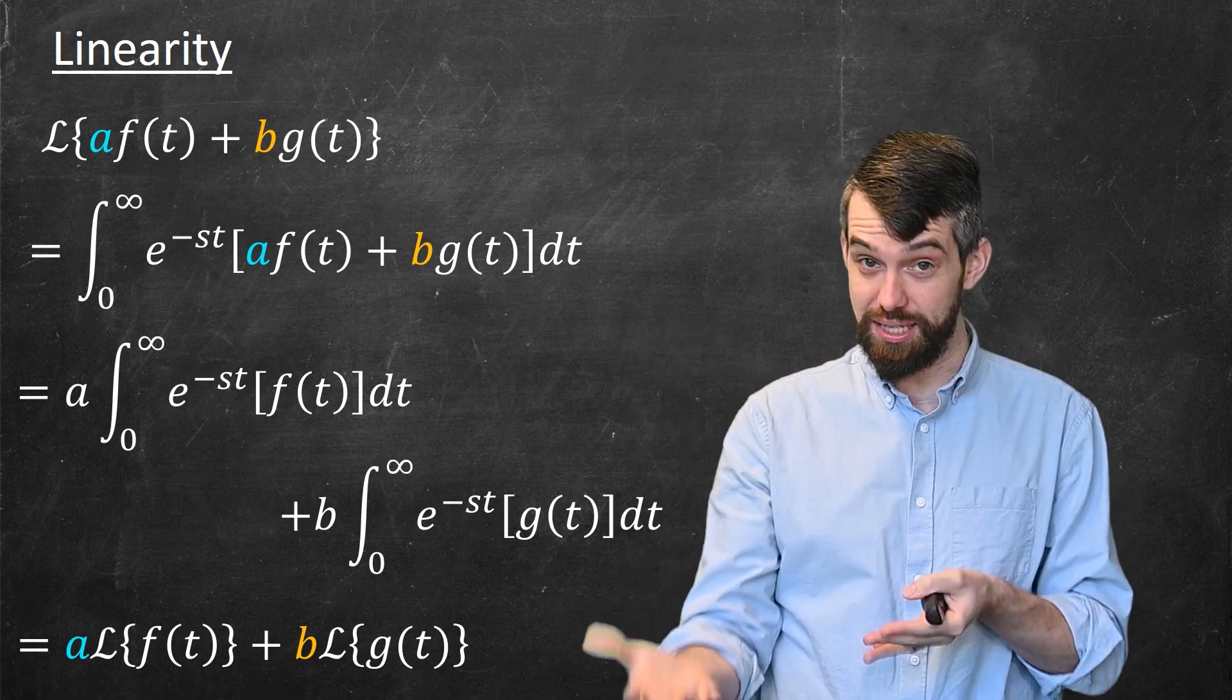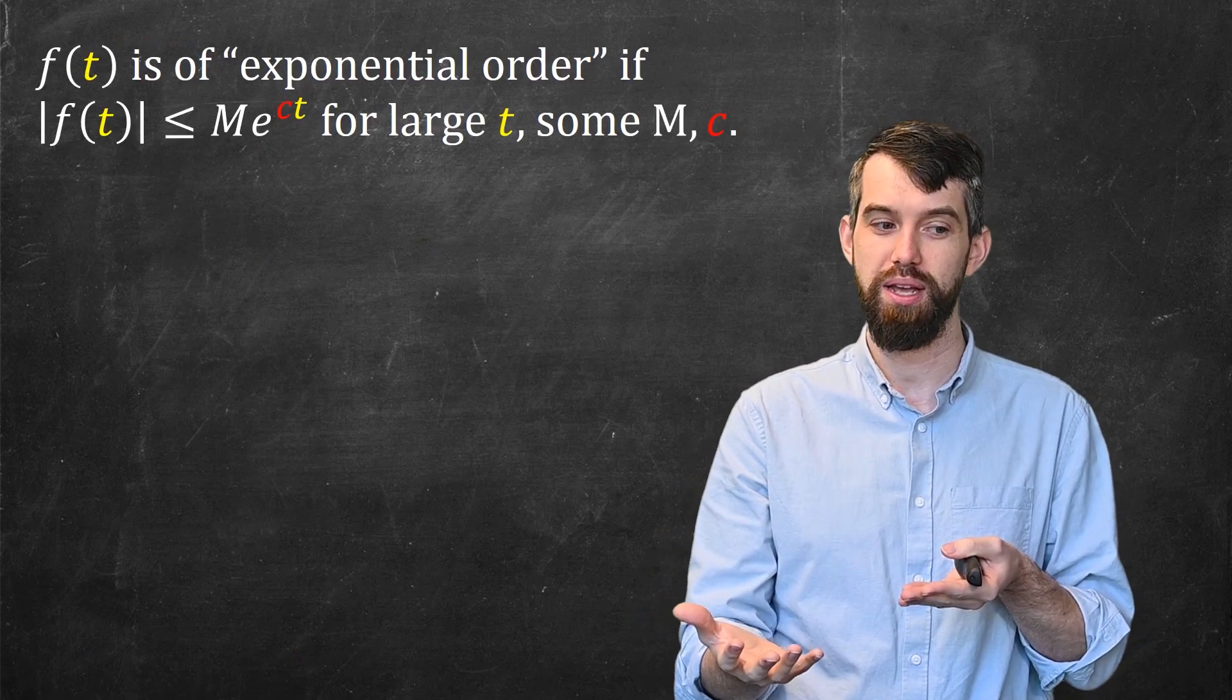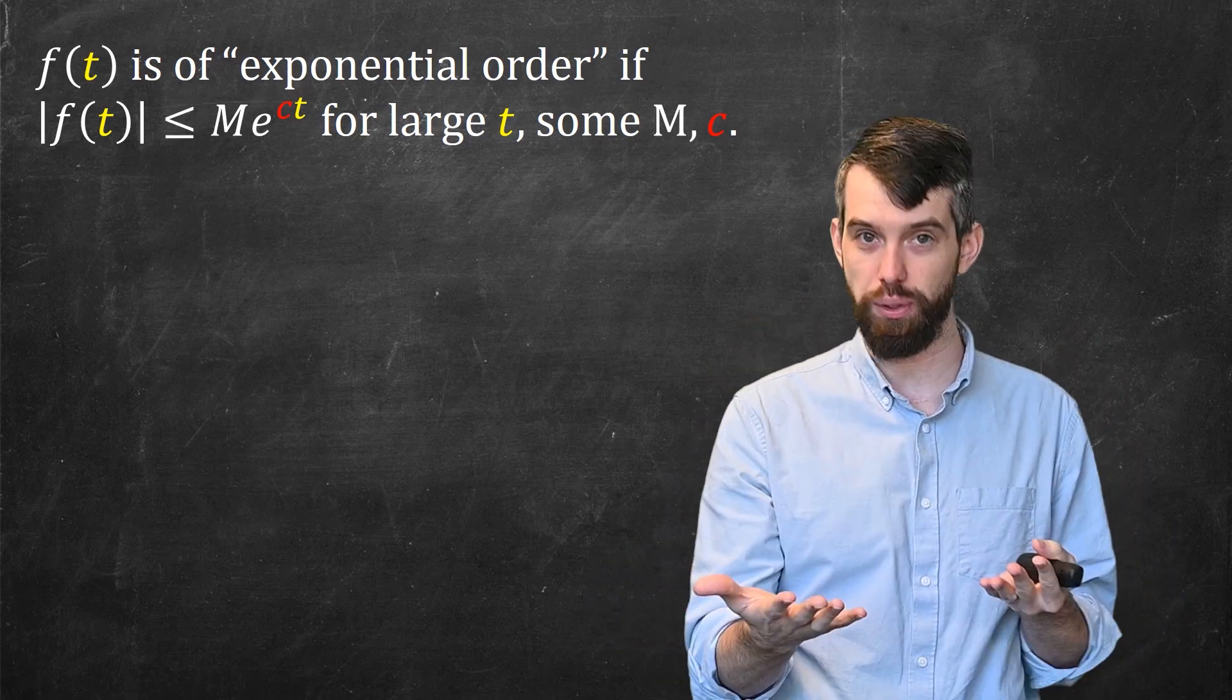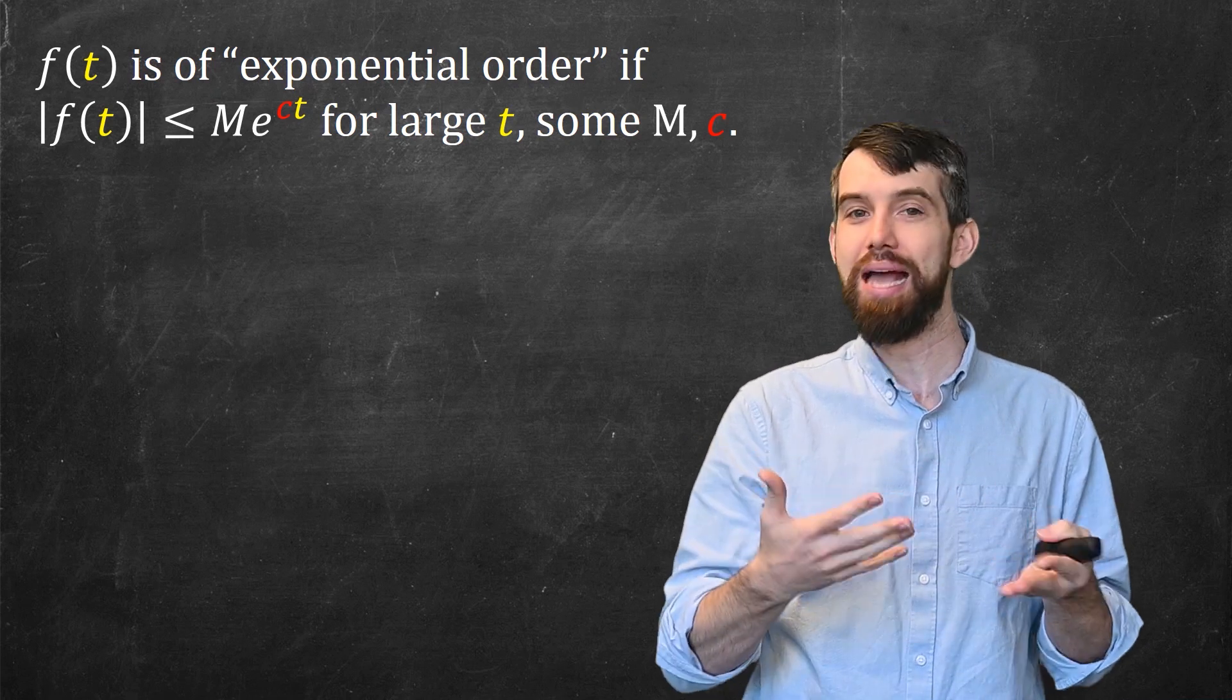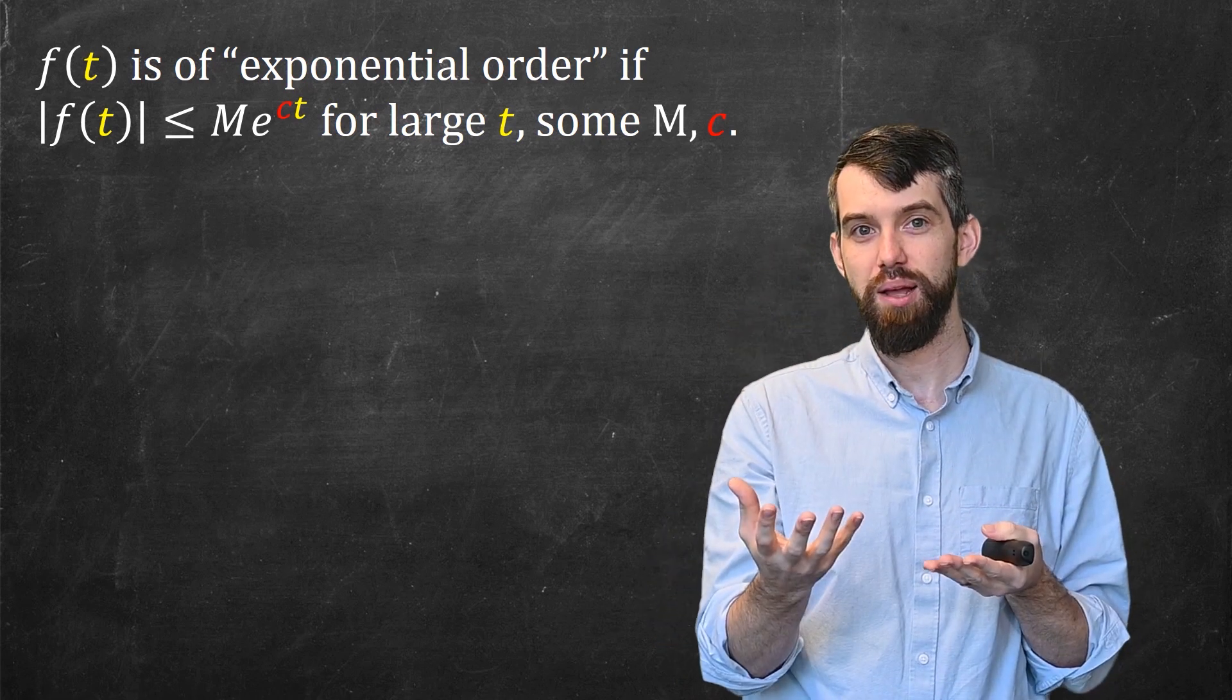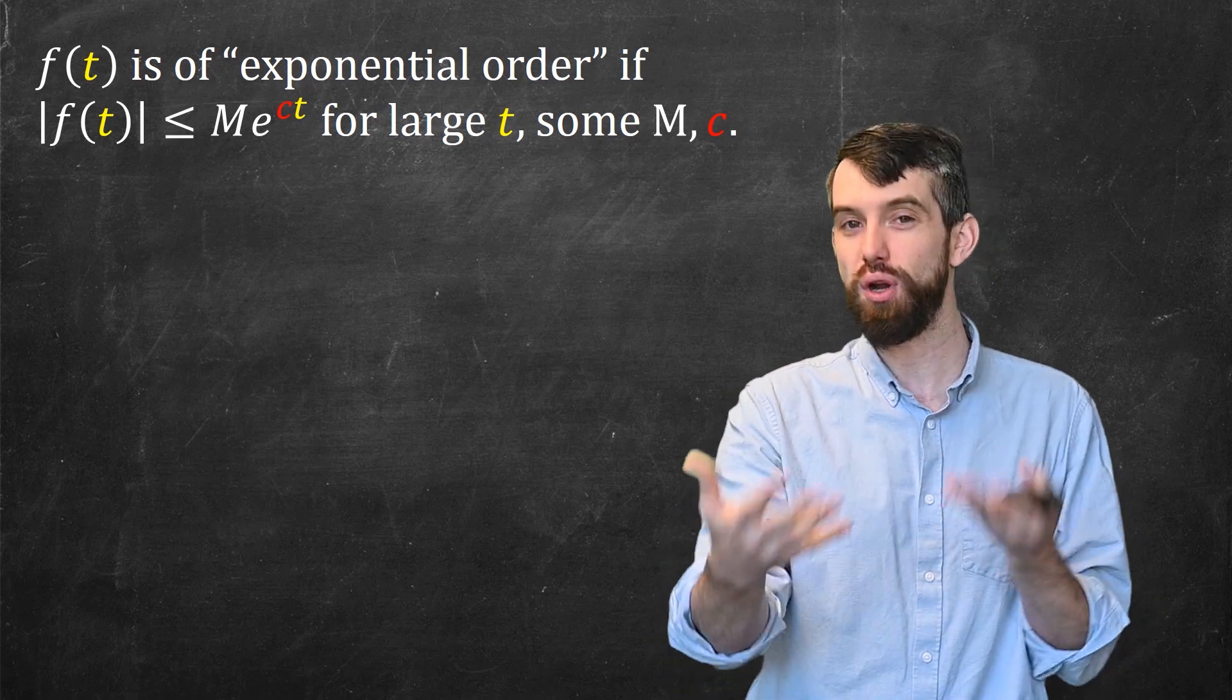Before I talk about existence, I want to introduce a little piece of terminology called what it means for a function to have exponential order. The idea is that the magnitude of the function is, eventually, for large enough values of t, simply less than some exponential function. I put an arbitrary constant M out front and some constant c in the exponent. The idea is that f(t) is going to be less than Me^(ct), at least for large enough values of t.